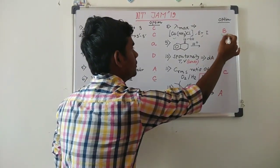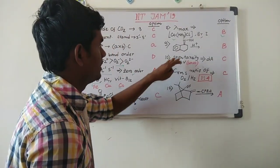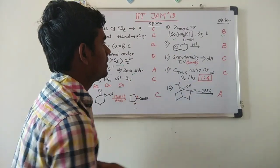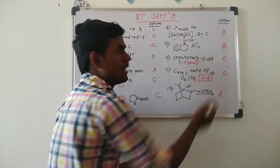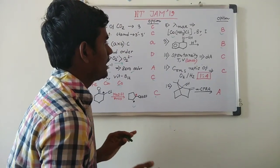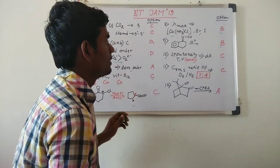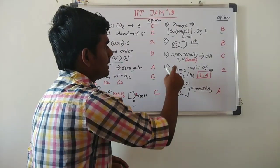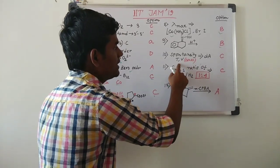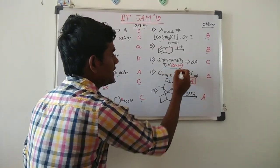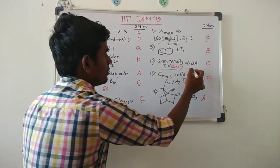Then they have asked Beckmann rearrangement, so the answer is B and we will come to the full details of the question. And then they have asked one question of spontaneity and they have given T and V is constant, and the answer will be delta A, and the option is C.